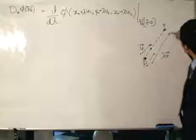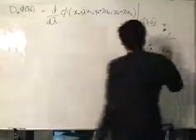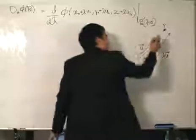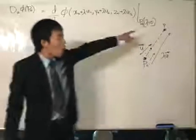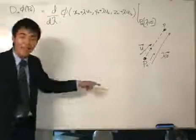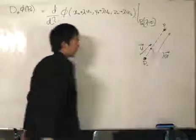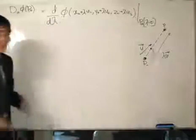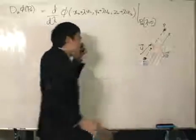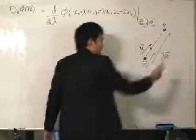If lambda is big, I'm going to travel a larger distance. So the new value of phi, obtained using the coordinates of p, is going to depend on the factor of lambda. In other words, the rate of change is really dependent on how much lambda changes.